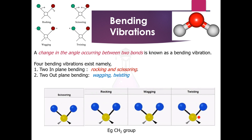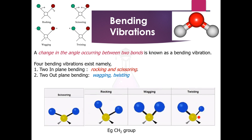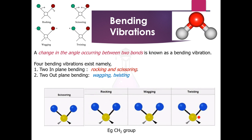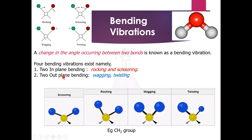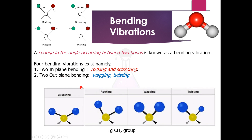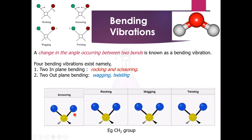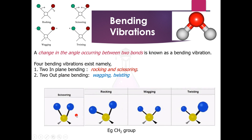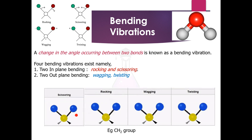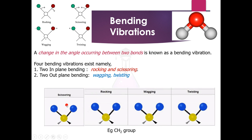Similarly, bending results in a change in bond angle. There are four types of bending vibrations — two are in-plane and two are out-of-plane bending. Rocking and scissoring are the in-plane types. Imagine you are holding a scissor and cutting something — that motion is nothing but a scissoring vibration.